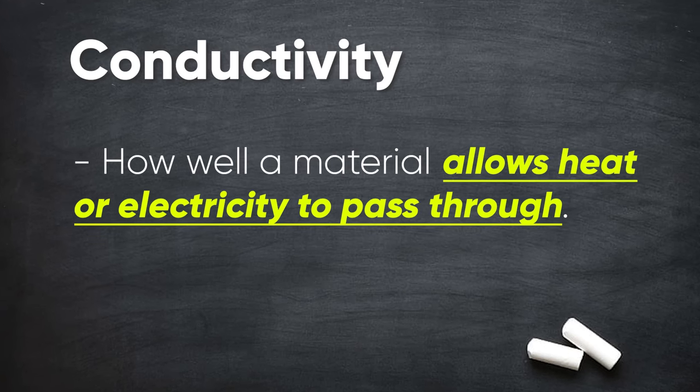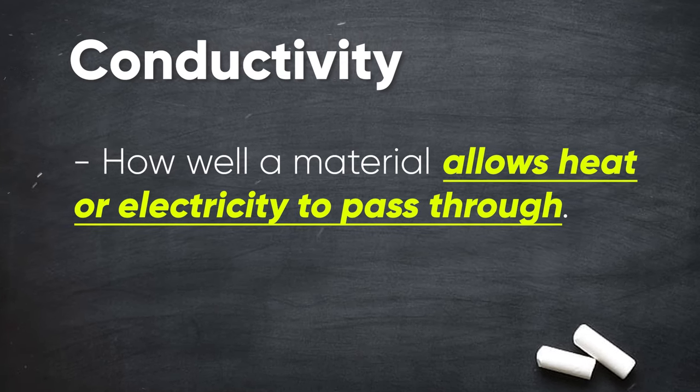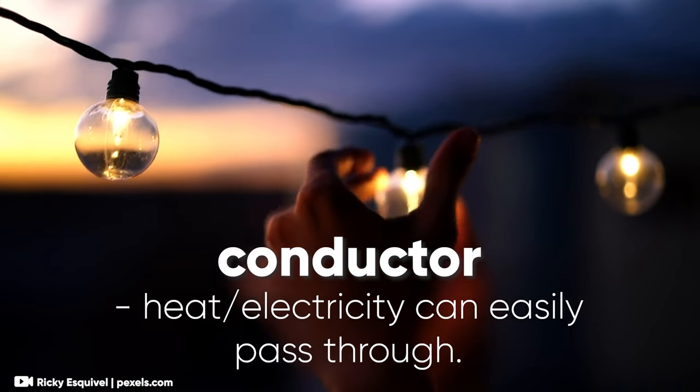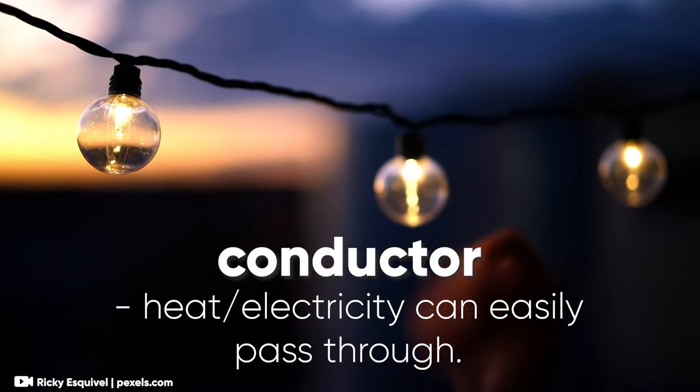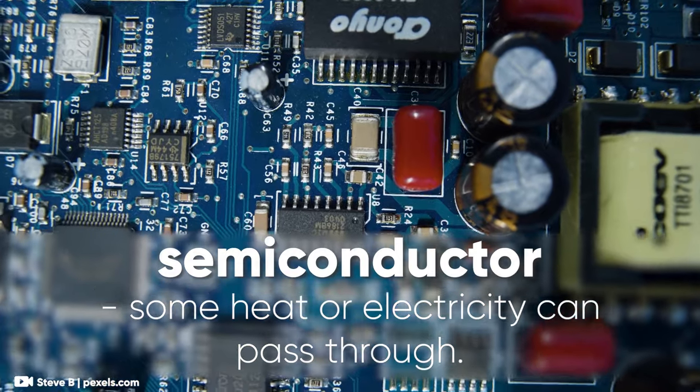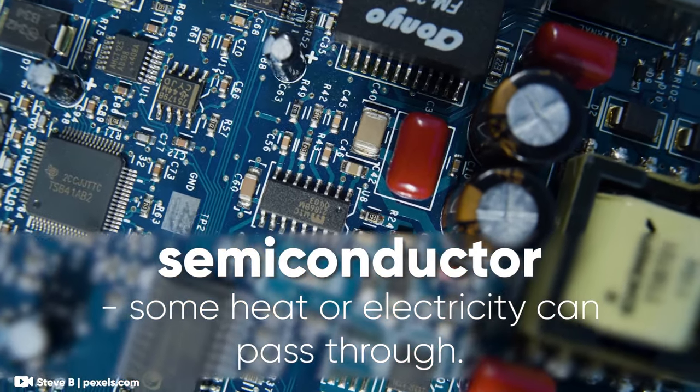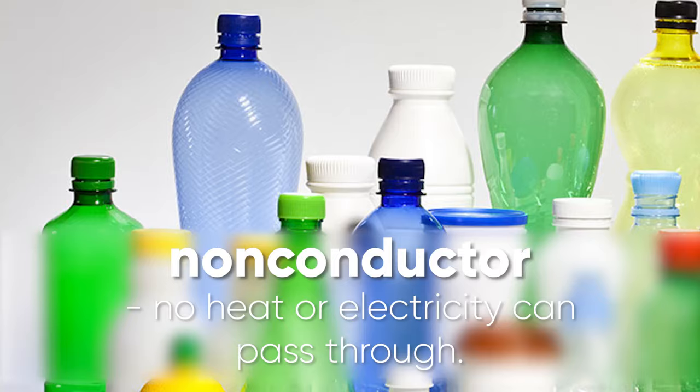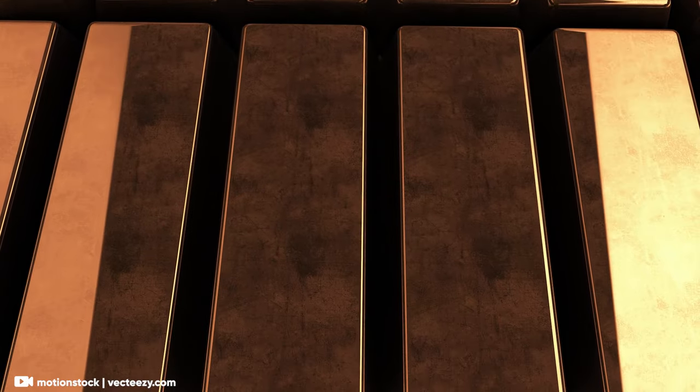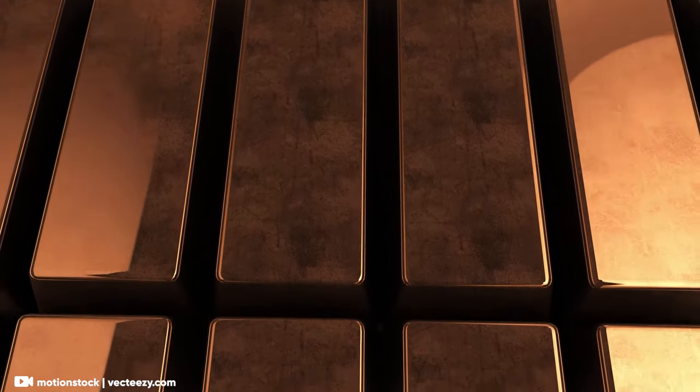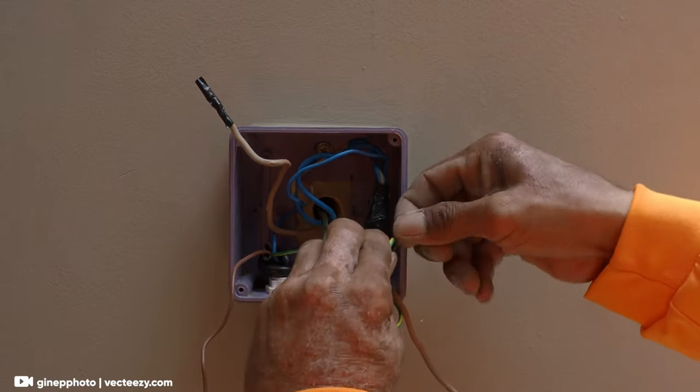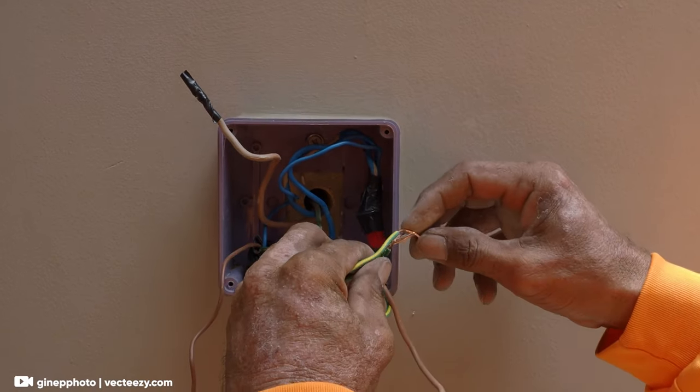Then we have conductivity. Conductivity is about how well a material allows heat or electricity to pass through. Materials that allow heat and electricity to pass through easily are called conductors. Materials that allow a small amount of heat and electricity to pass through are called semiconductors, while materials that do not allow any heat nor electricity to pass through are called non-conductors. Metals like copper and aluminum are great conductors, because heat and electricity can easily pass through them, which is why they are two of the best materials to use for making electrical wires.